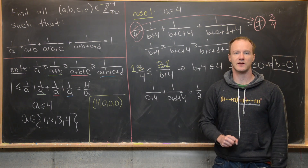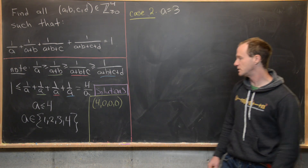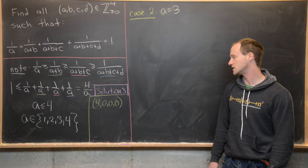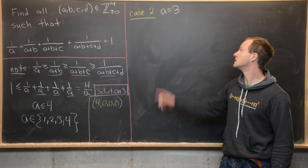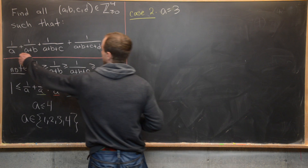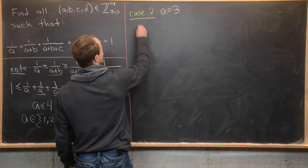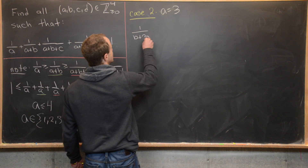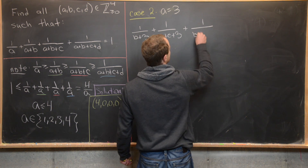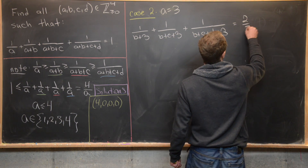Case 2: A = 3. We argued that A = 4 gives only the solution (4,0,0,0). Now for A = 3, the first term is 1/3, which we move to the other side giving 2/3. That leaves: 1/(B+3) + 1/(B+C+3) + 1/(B+C+D+3) = 2/3.